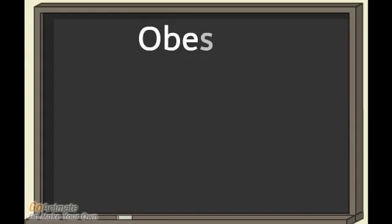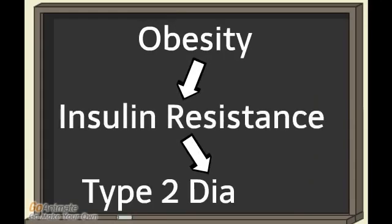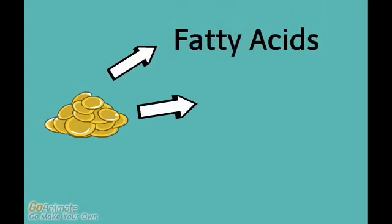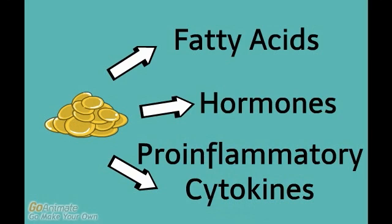Research shows that obesity can lead to insulin resistance which can then lead to type 2 diabetes. When the calories you consume are greater than the calories you use for energy, the excess calories are stored as fat, also known as adipose tissue. Adipose tissue can be burned for energy but it also releases fatty acids, hormones, and pro-inflammatory cytokines as part of its normal function.